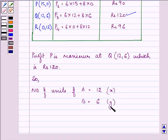So, the number of units of article A should be 12 and that of B should be 6. This completes the answer. Hope you understood it well and enjoyed it too. Have a nice day.